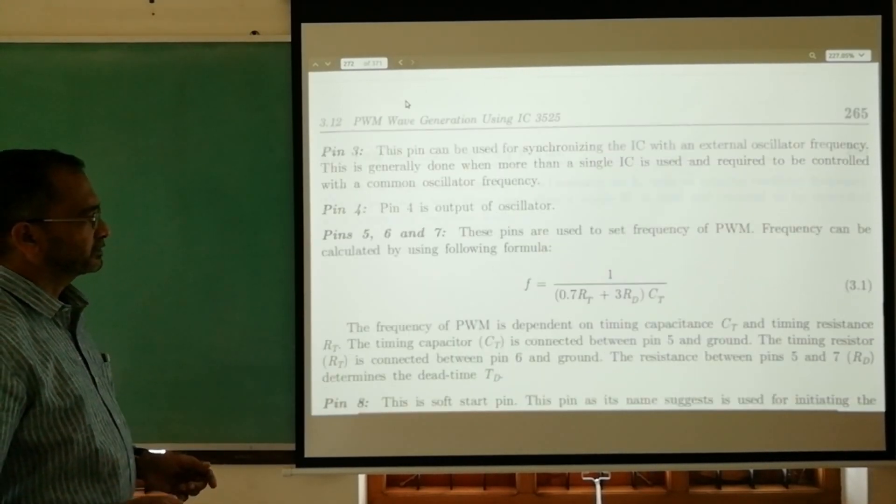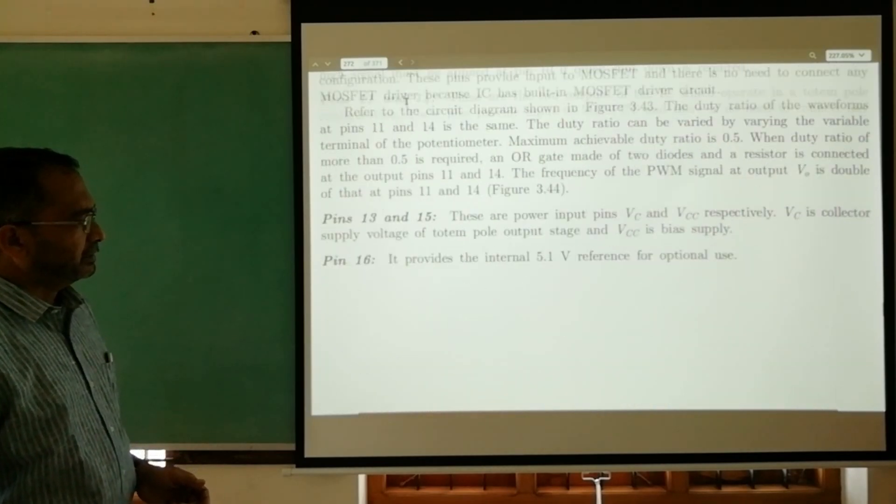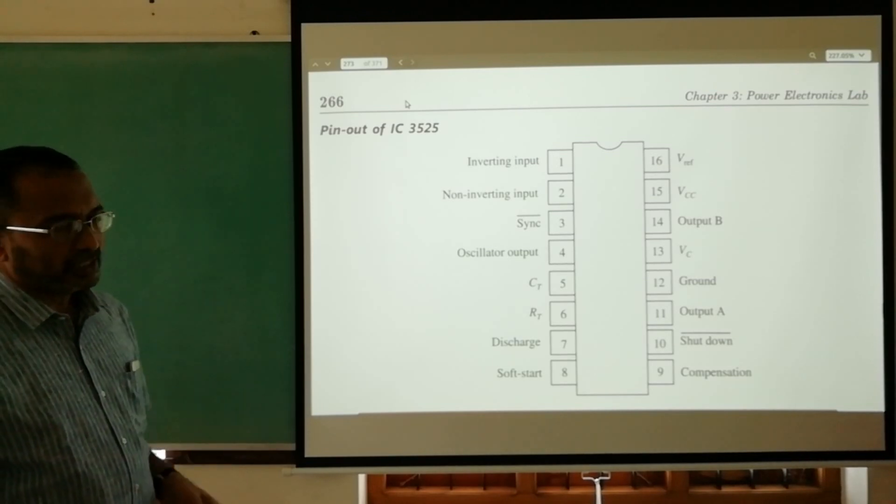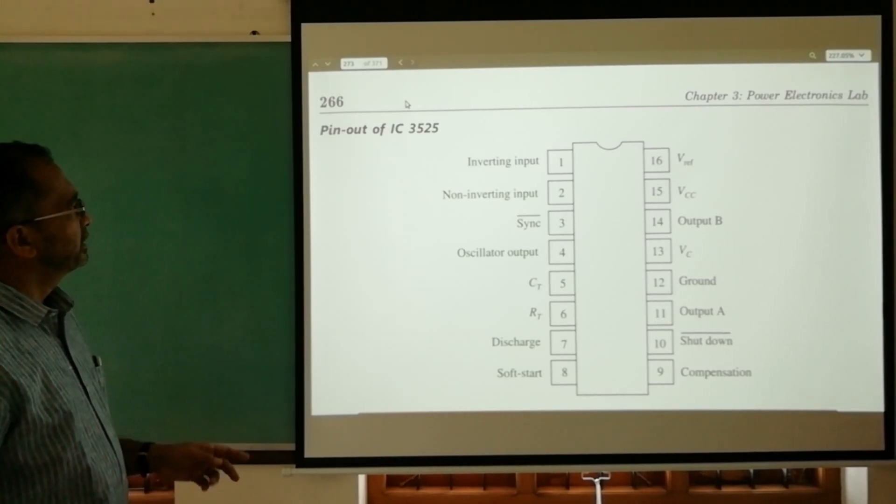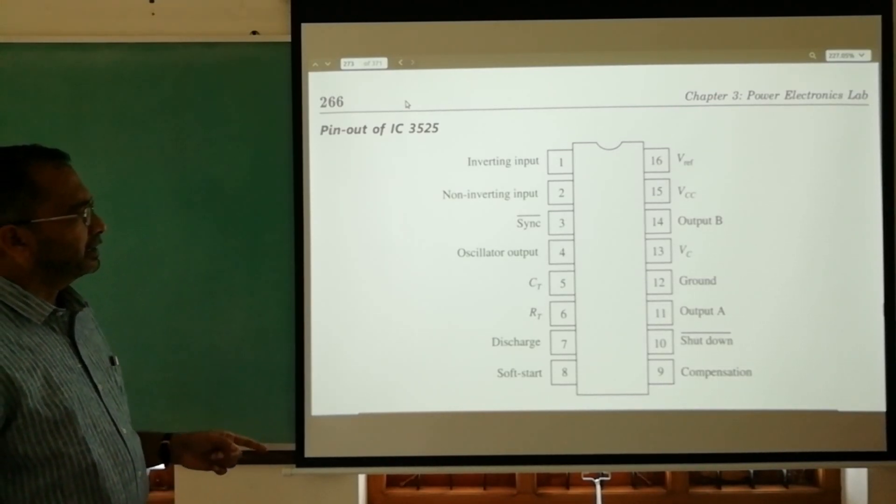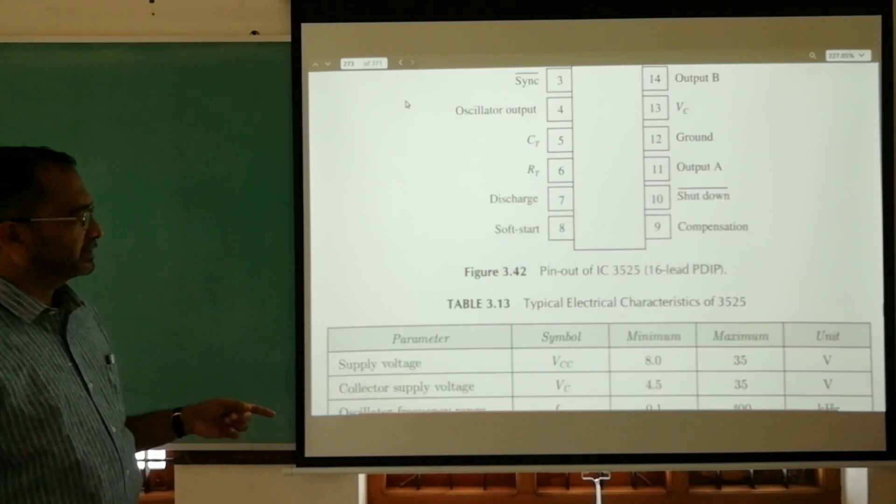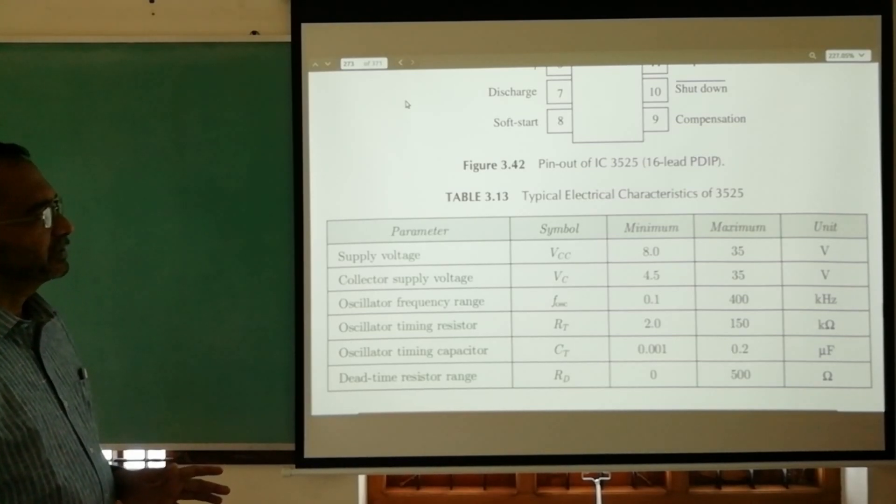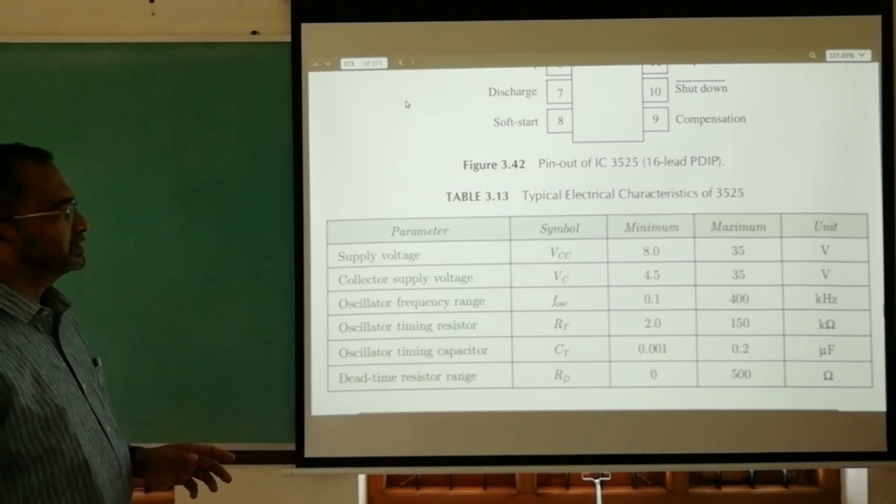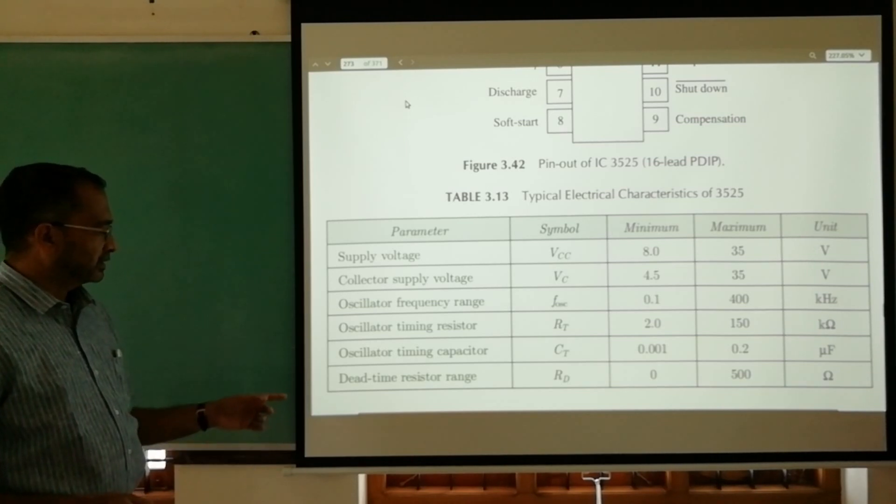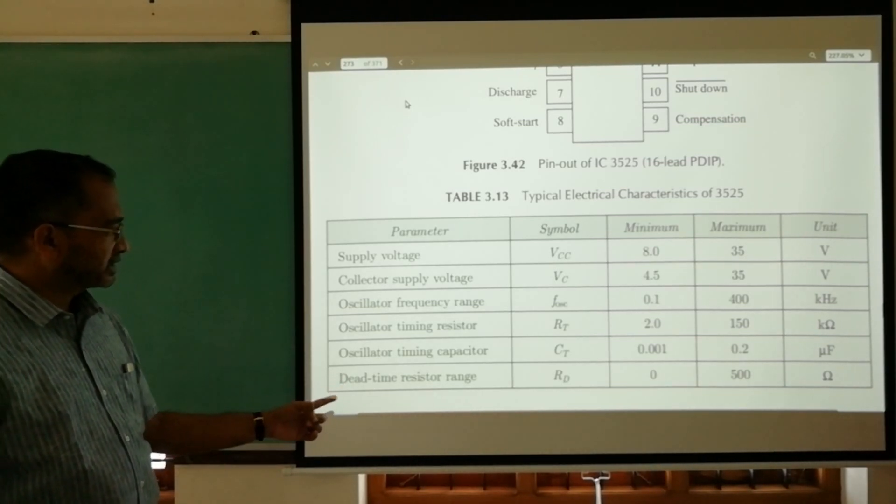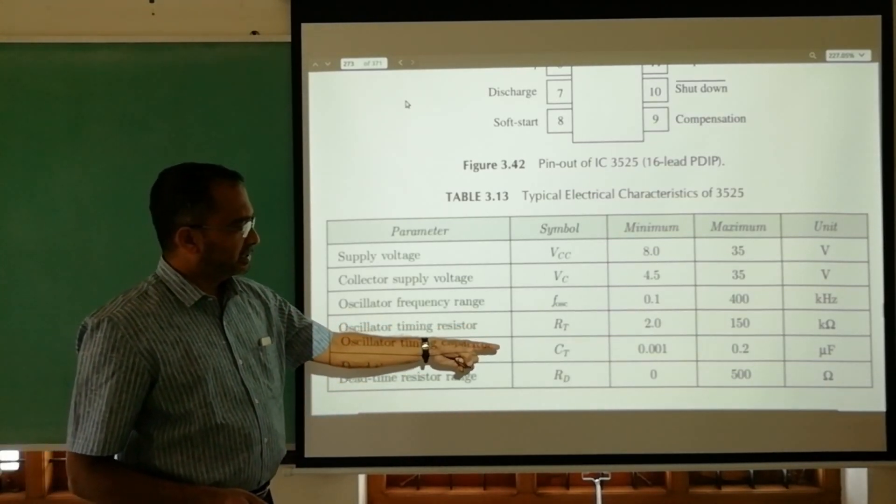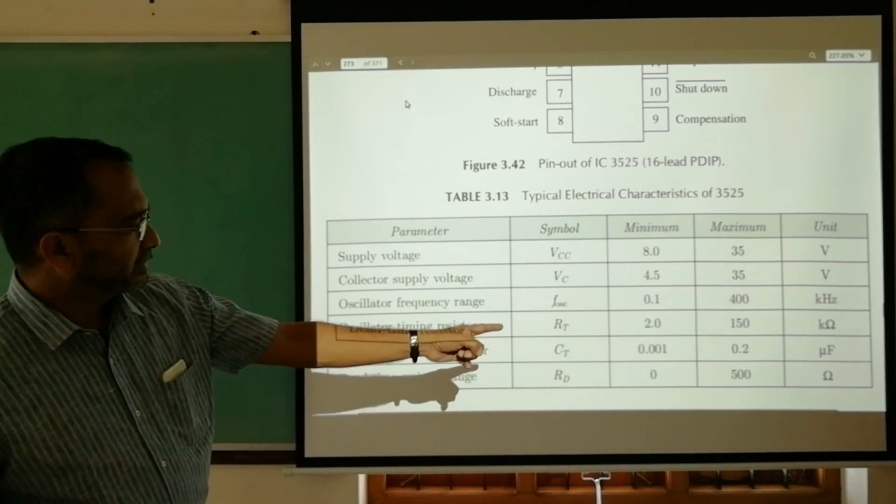This IC's pin diagram is this. The important characteristics of this IC are given here, like the supply voltage maximum 35 volt, while the minimum voltage VCC you can apply is 8 volt. The timing resistance RT, dead time resistance RD, and CT ranges are given: maximum of 150 kilo ohm, 120 kilo ohm, and 0.2 microfarad to 500 microfarad respectively.